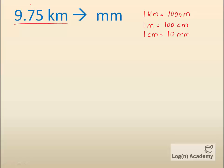This value 9.75 km is a big unit, and mm is a small unit. To convert from big to small units, we multiply.